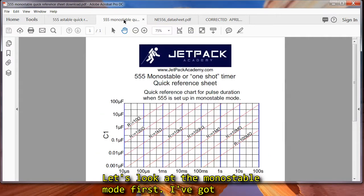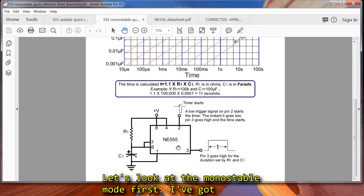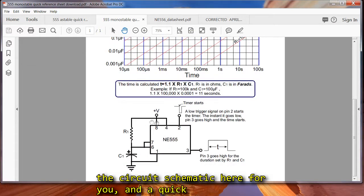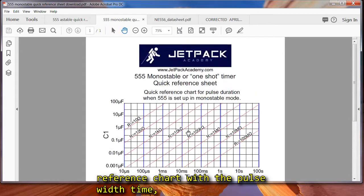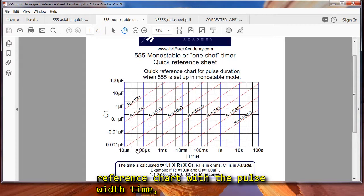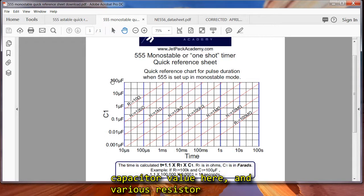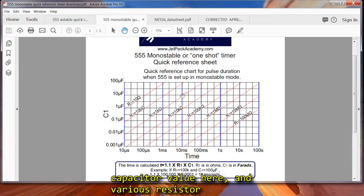Let's look at the monostable mode first. I've got the circuit schematic here for you, and a quick reference chart with the pulse time, the capacitor value here, and various resistor values here.